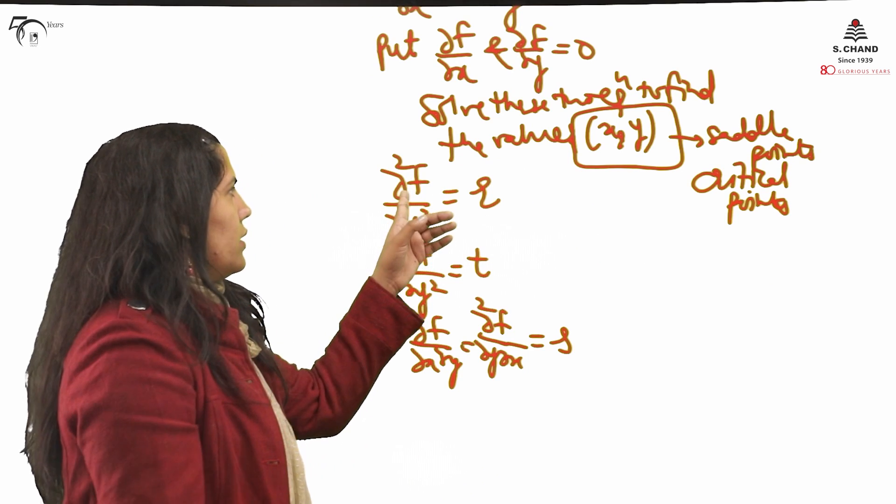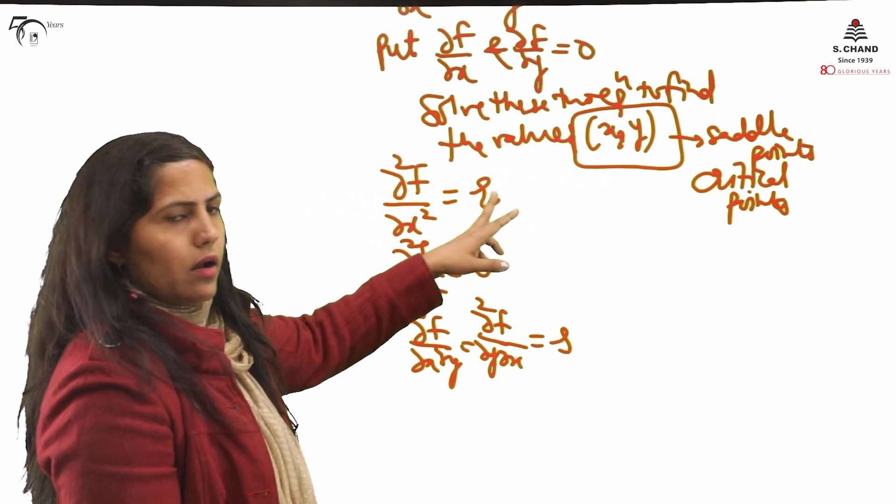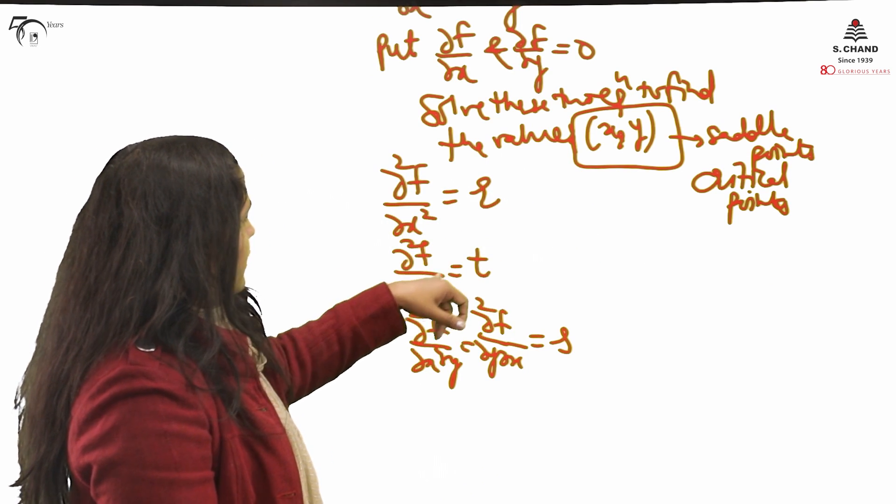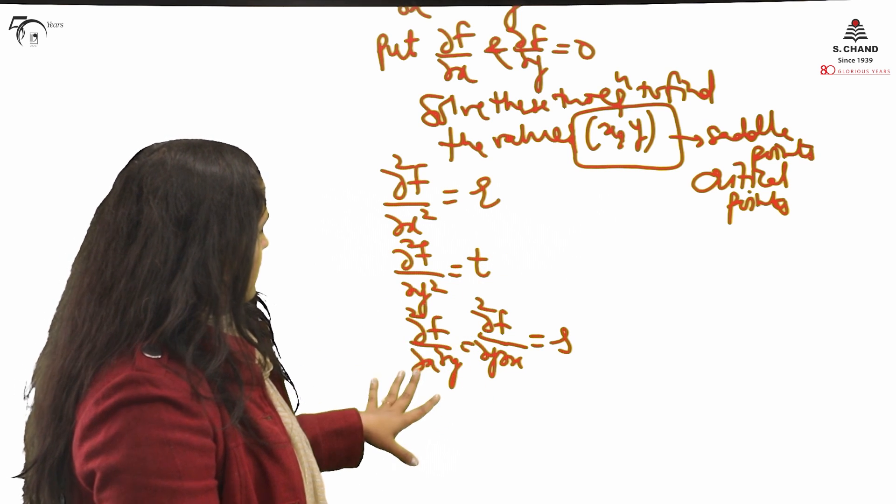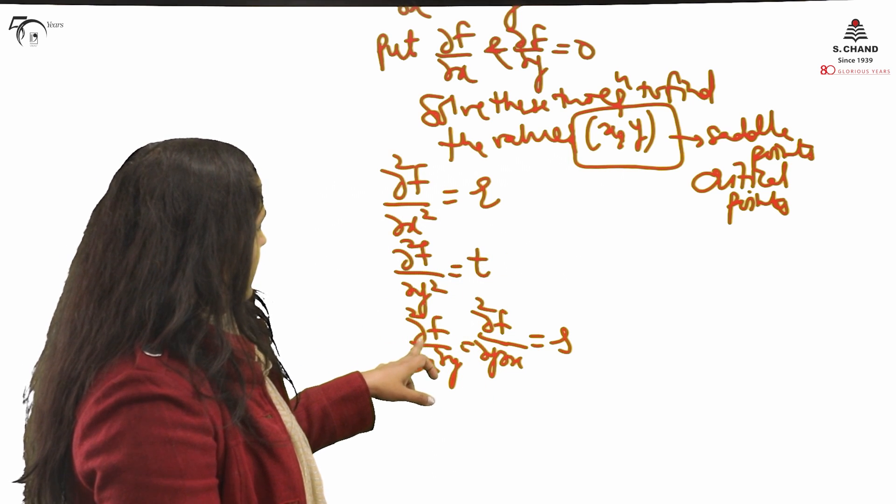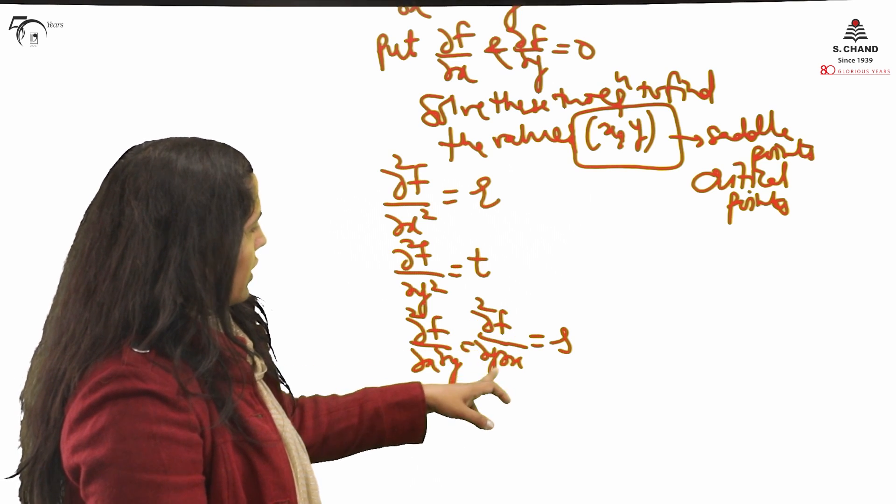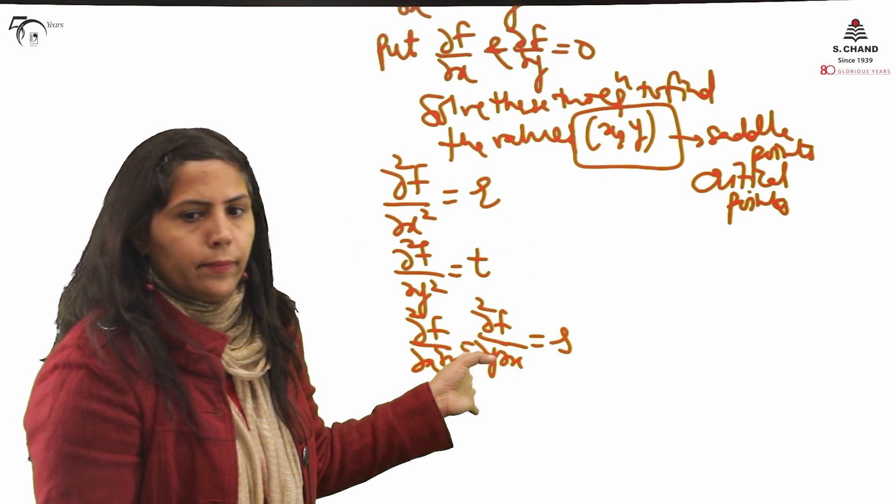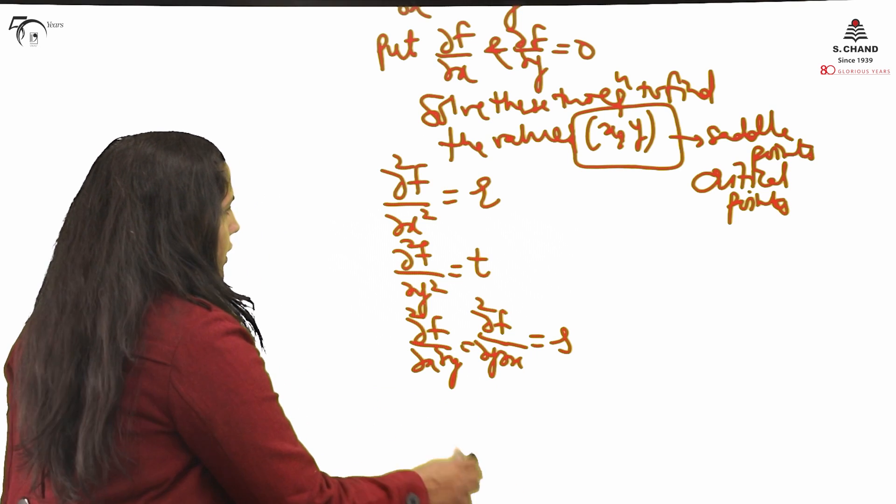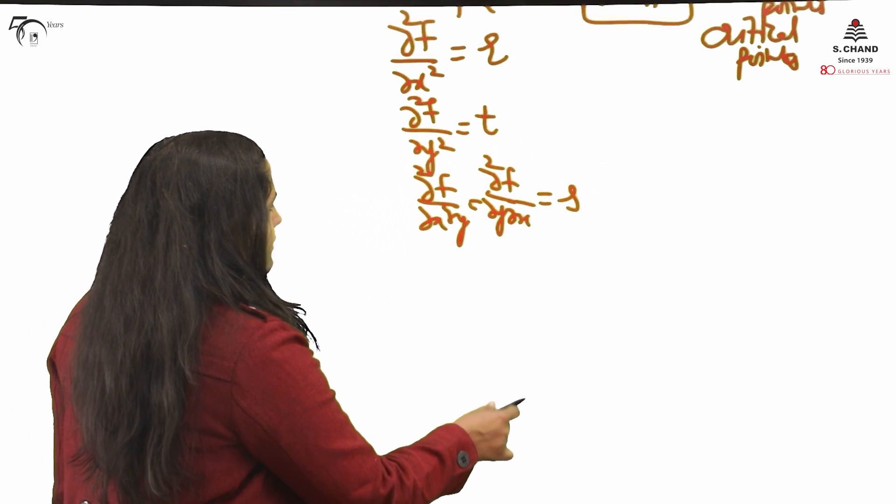It means either you find this or this, the value will be same. I will call ∂²f/∂x² as r, ∂²f/∂y² as t, and ∂²f/∂x∂y or ∂²f/∂y∂x as s. Anyhow you can find it, this will be s.